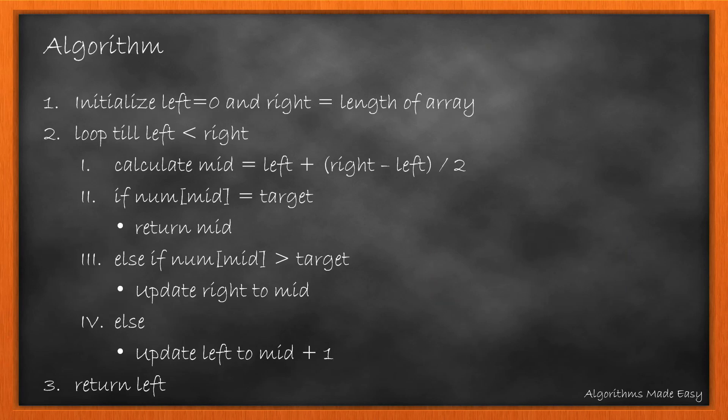We will first initialize left and right then we loop till left is less than right. Now we calculate mid. If the value at mid is equal to target we return mid. If it is greater we update right to mid, else we update left to mid plus 1. At the end we return left.